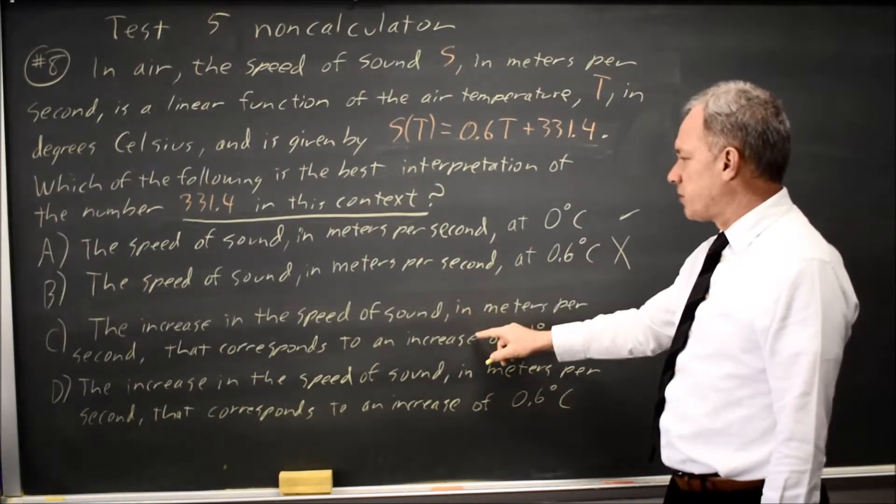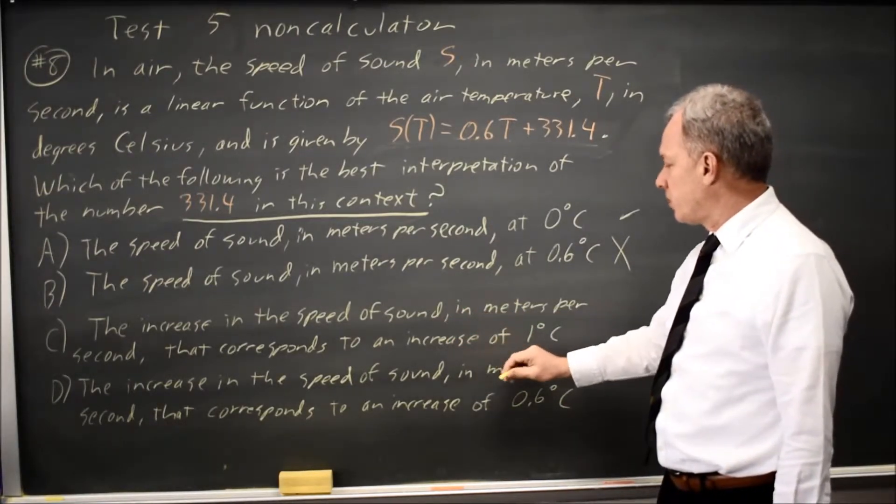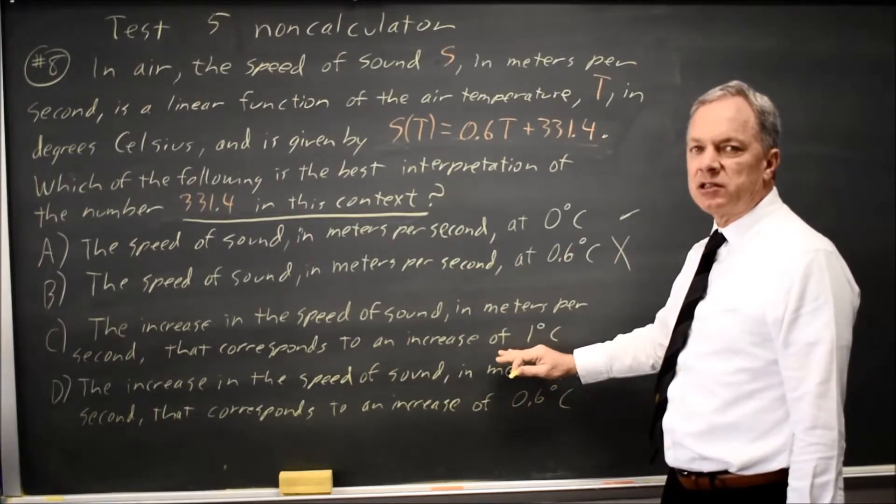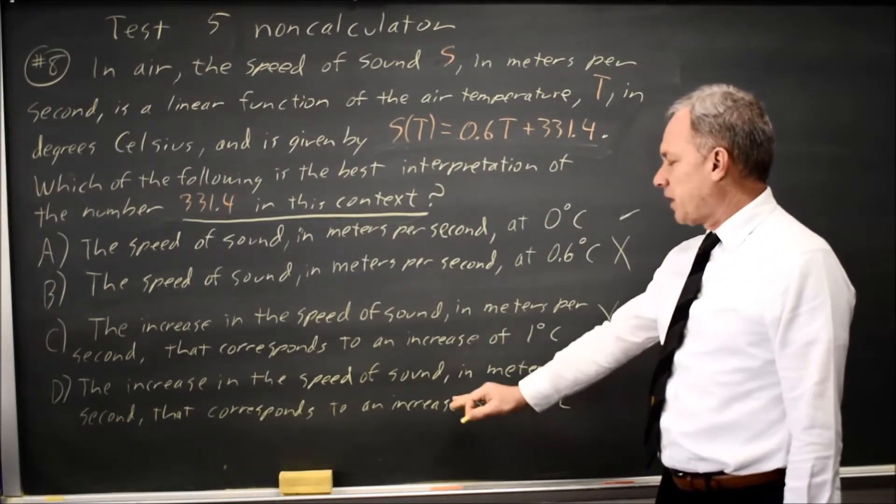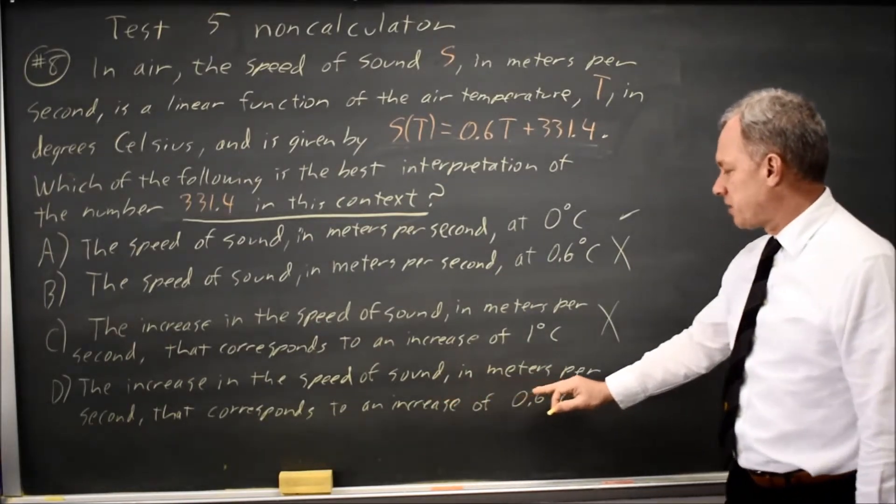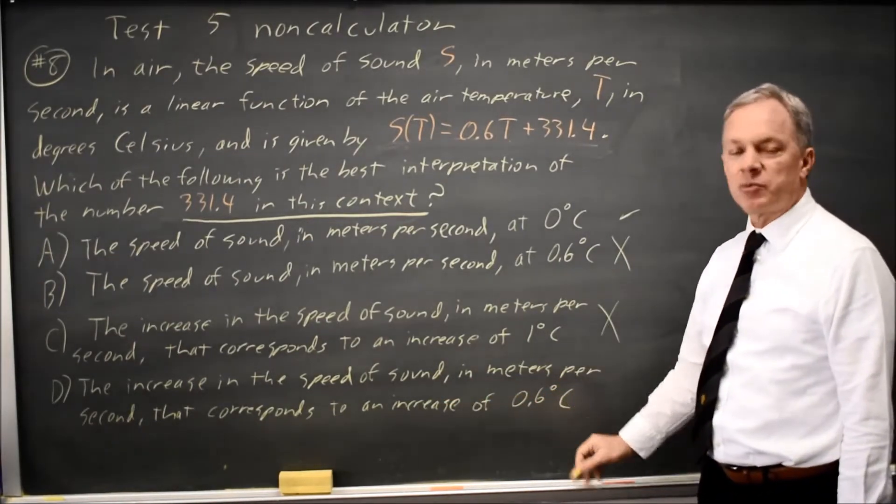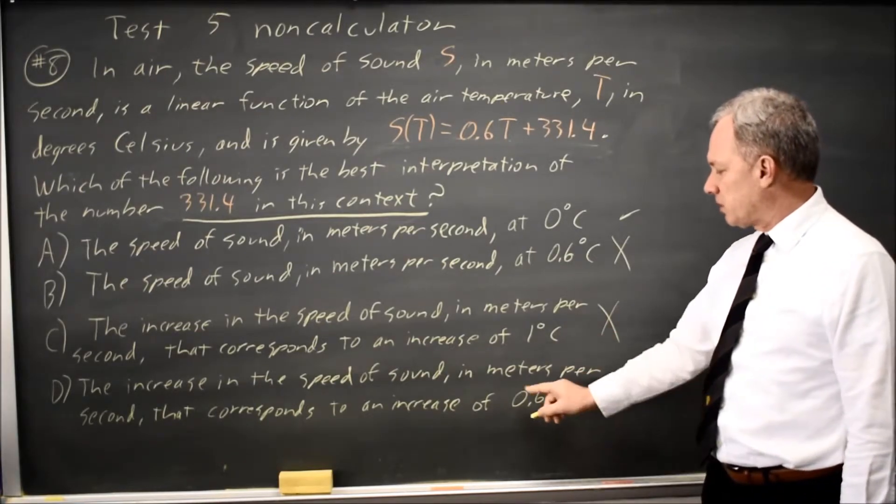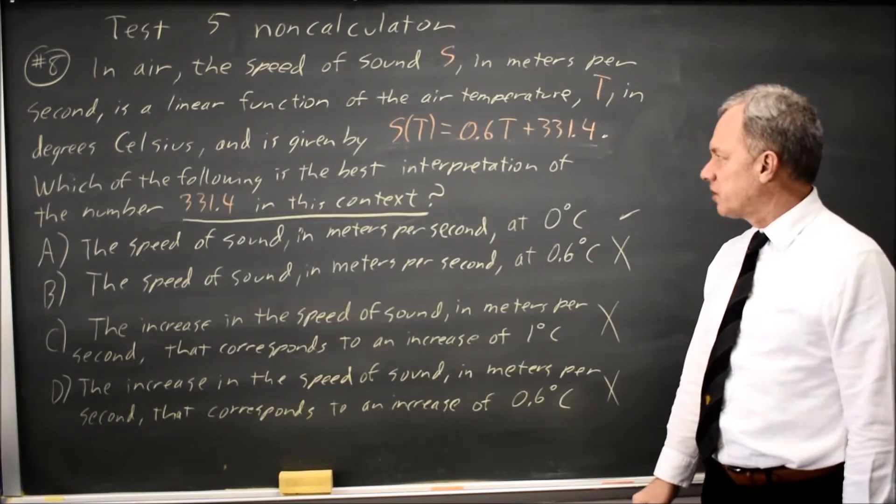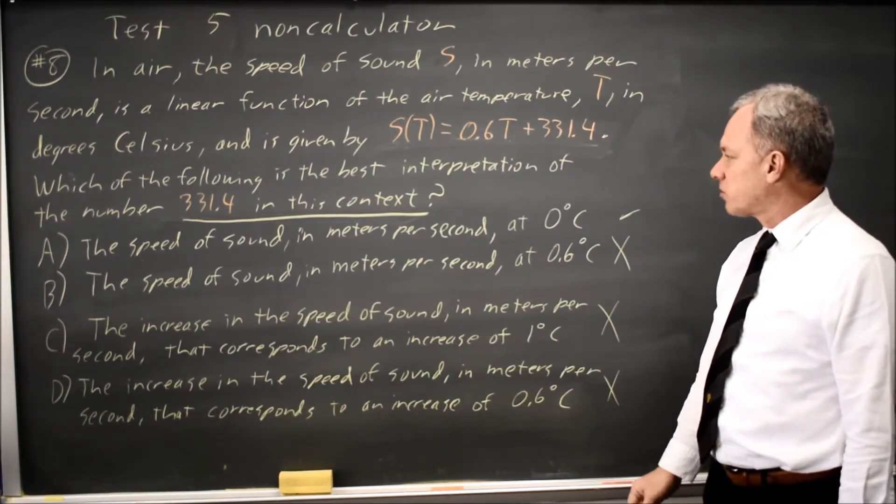The increase in the speed of sound in meters per second that corresponds to an increase of 1 degree C, that is a description of the slope, 0.6, so that is not correct. And choice D, the increase in the speed of sound in meters per second that corresponds to an increase of 0.6 degrees C. That is similar to C, but with the wrong value for the increase in temperature, so that one is wrong.